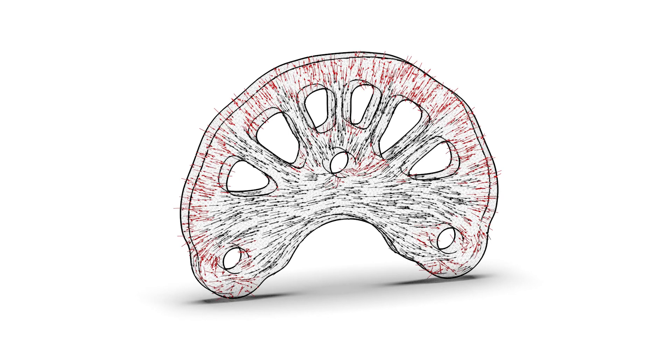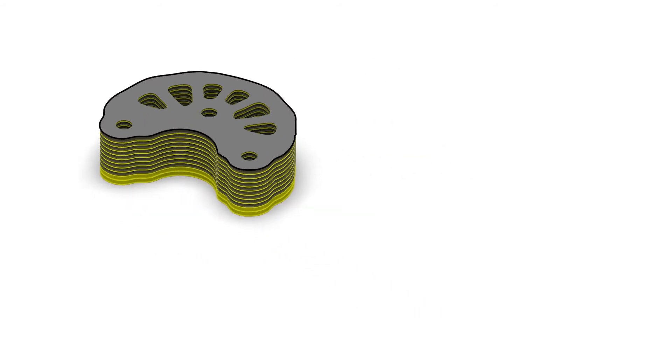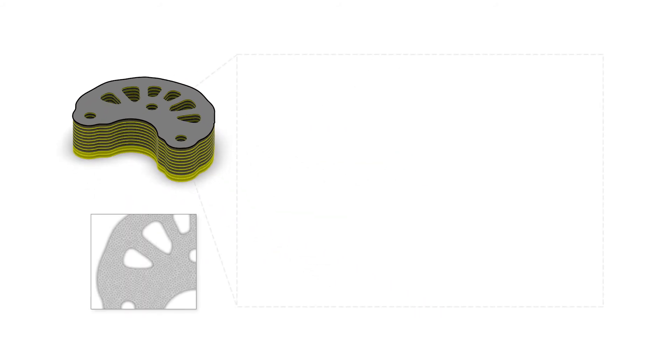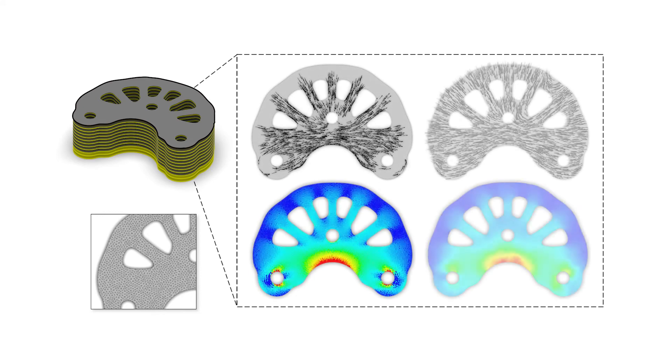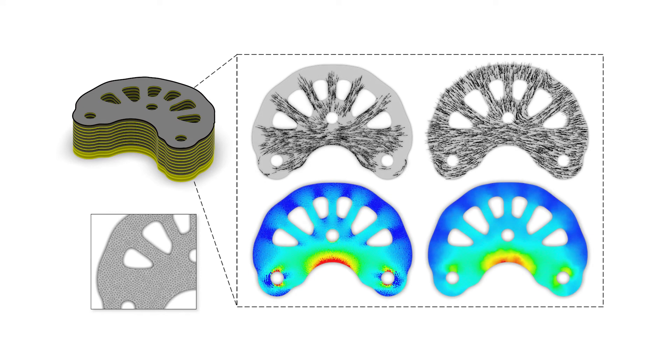After reorientation, a filter is applied to remove the vectors in locally incompatible regions. Given a compatible vector field, we convert it into a scalar field on every planar layer during the slicing computation for 3D printing.